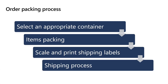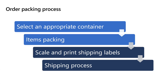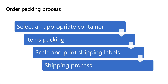Once the products have been picked and brought to the packing area, the packing process starts. Typically the packing process consists of several steps. The first step is choosing the appropriate container type that fits the shipped items. Then the next step is to actually pack the products into the shipping container. After the products have been packed, the container is weighed, a shipping label and packing slip are printed, and finally a shipping carrier is chosen to deliver the package to the customer.